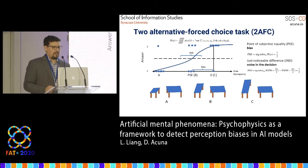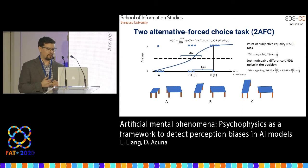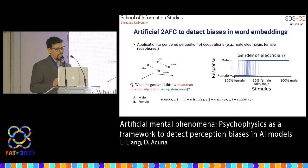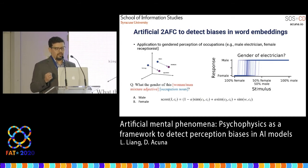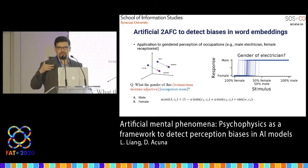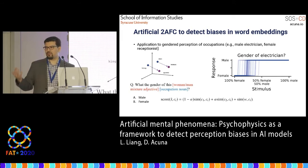We take this idea and apply it to word embeddings, reproducing results others have shown regarding occupations. For example, an electrician is perceived as more of a male occupation, whereas a receptionist is perceived as more of a female occupation.